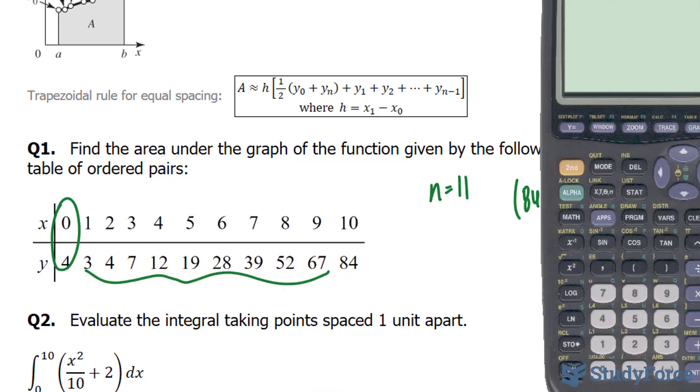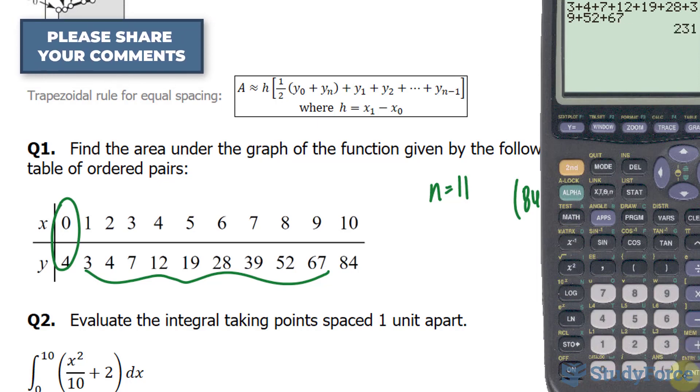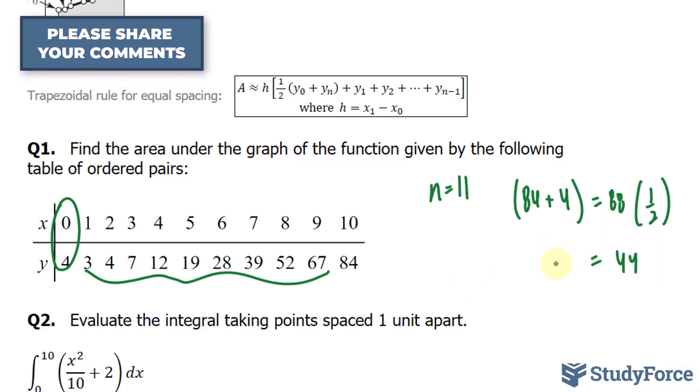So let's go ahead and turn on our calculator and apply these numbers. We have 3 plus 4 plus 7 plus 12, 19, 28, 39, 52, 67, and we stop right there. That gives us 231. So this is 231.